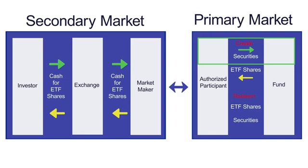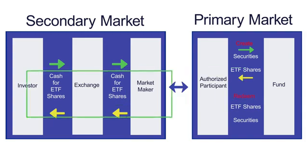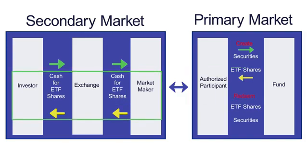What they will do is deliver the underlying basket that they were buying up all day long as they were selling the ETF. They will deliver that basket to the fund. The fund will take in those assets and create new ETF shares, delivering those ETF shares back to the authorized participant or market maker to flatten out the short position that they had. At the end of the day, the market maker has no position — they have delivered the basket and flattened out their short position.